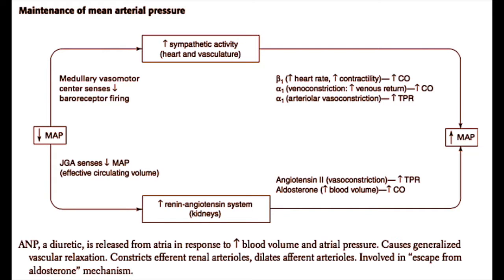We will discuss some of the mechanisms by which the heart is able to normalize the mean arterial pressure. In a situation where the mean arterial pressure drops, such as with hemorrhage or with sepsis, as you can see on the left side of the diagram, that mean arterial pressure can drop and cause a reaction by the body.